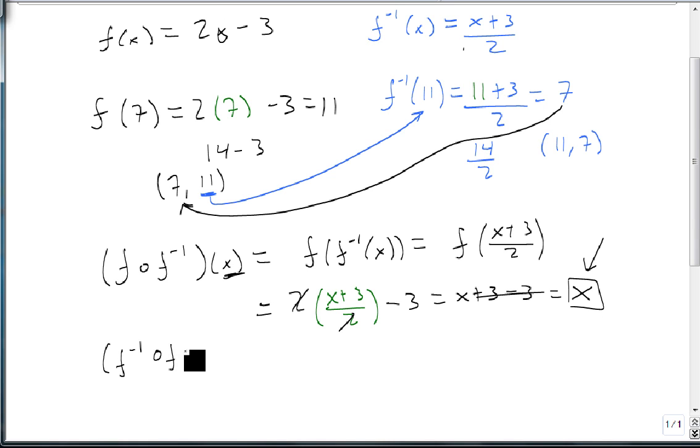Now, notice this also works the other way. If I want to find the inverse of f of x first, then we get f inverse of 2x minus 3, which is equal to 2x minus 3, plus 3 over 2, which is 2x over 2.